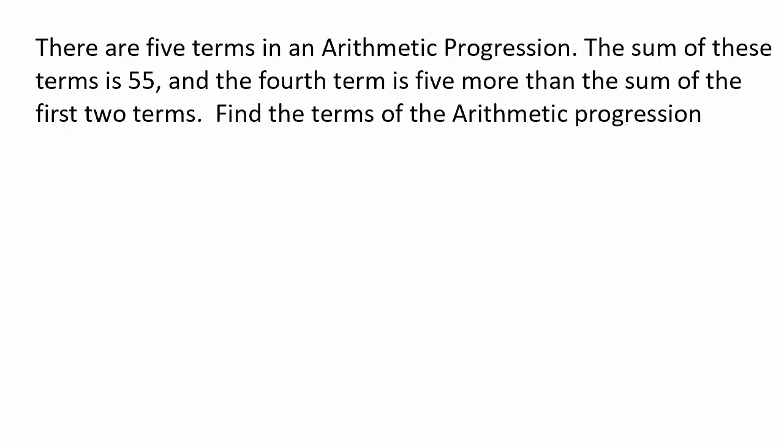There are 5 terms in this arithmetic progression. The sum of these terms is 55. The fourth term is 5 more than the sum of the first two terms. Find the terms of the arithmetic progression.